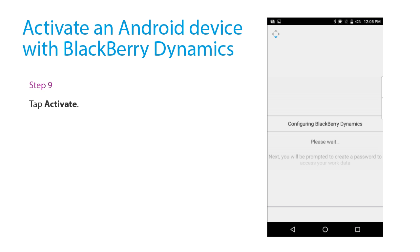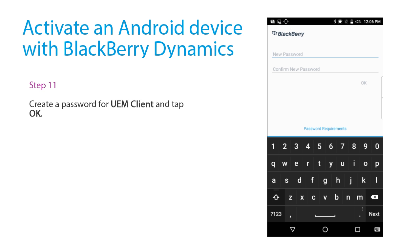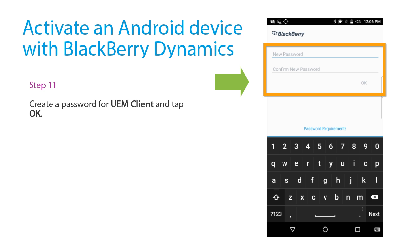Wait while BlackBerry Dynamics is configured. Tap Allow. Create a password for the UEM Client and tap OK.